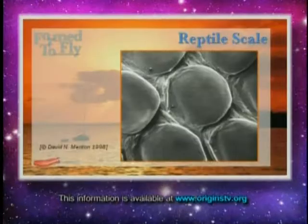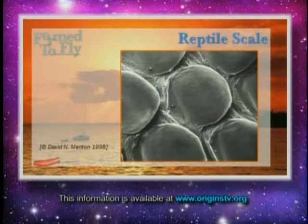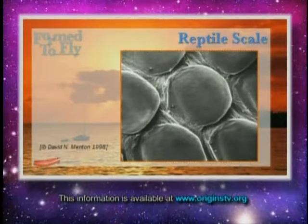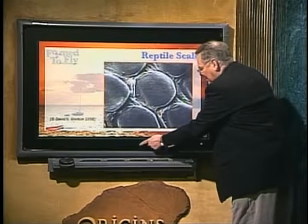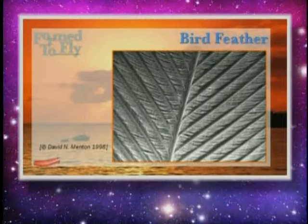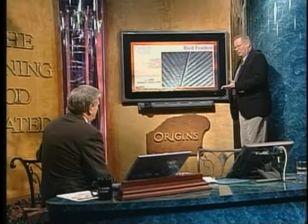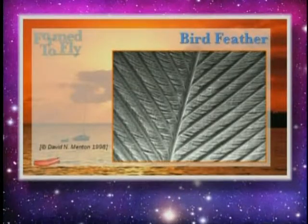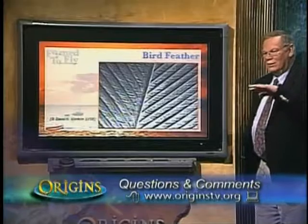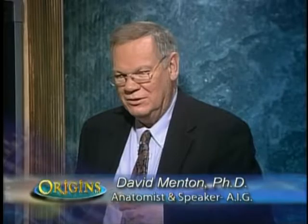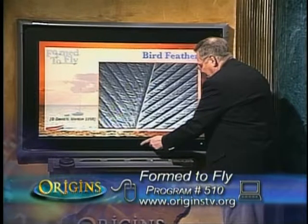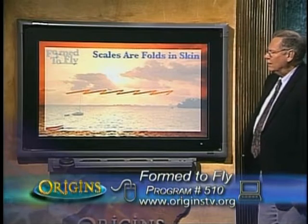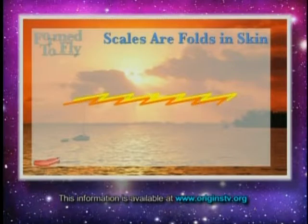We've heard that feathers and scales are really very similar — at least that's what evolutionists say. So let me give you a test. Here's the reptile scale from a boa constrictor viewed under a scanning electron microscope. Now I'll bring in a feather — can you spot the difference? It makes you wonder why they suggest similarity when they are just about as dissimilar as you could possibly get. You can only reach that conclusion if that's the conclusion you want to reach — prior bias, not evidence.